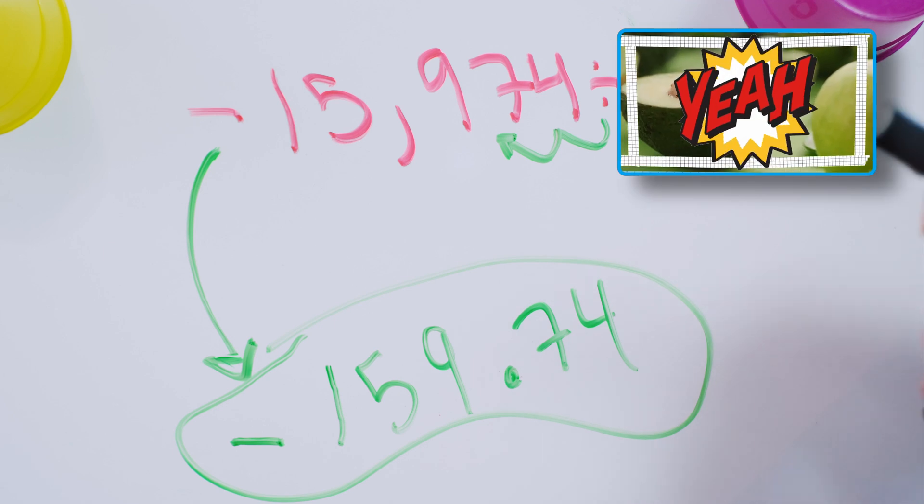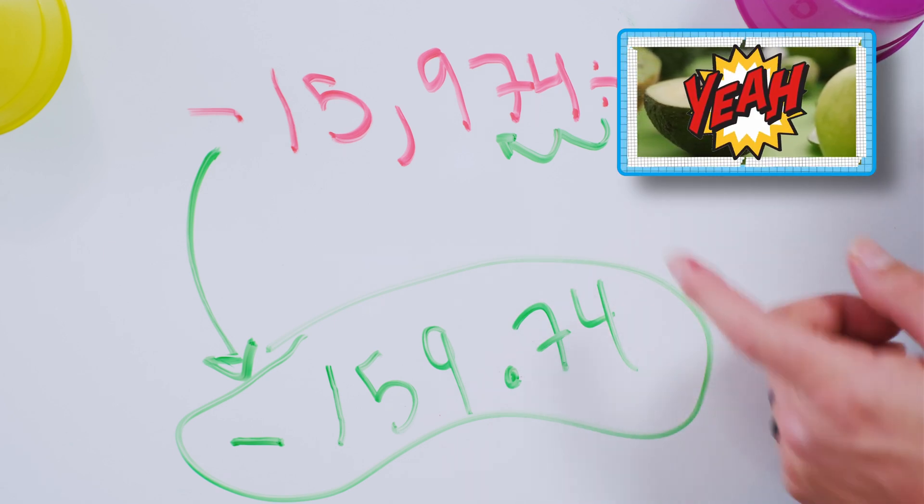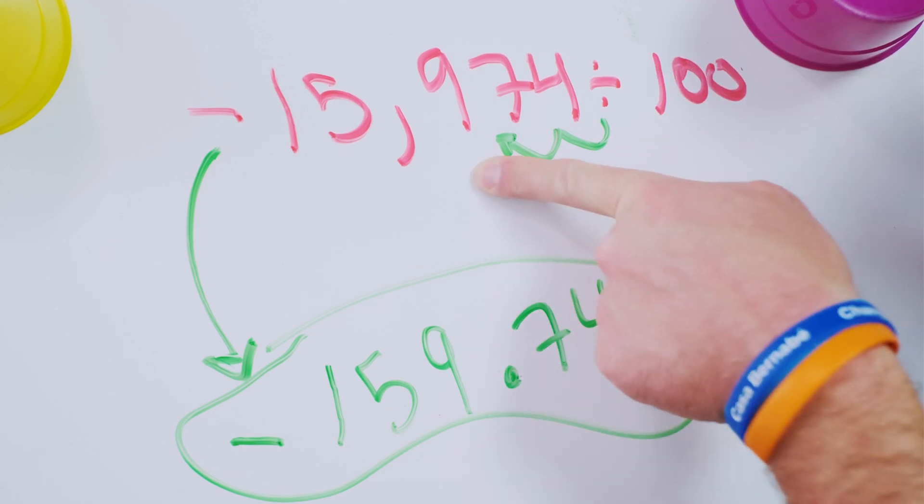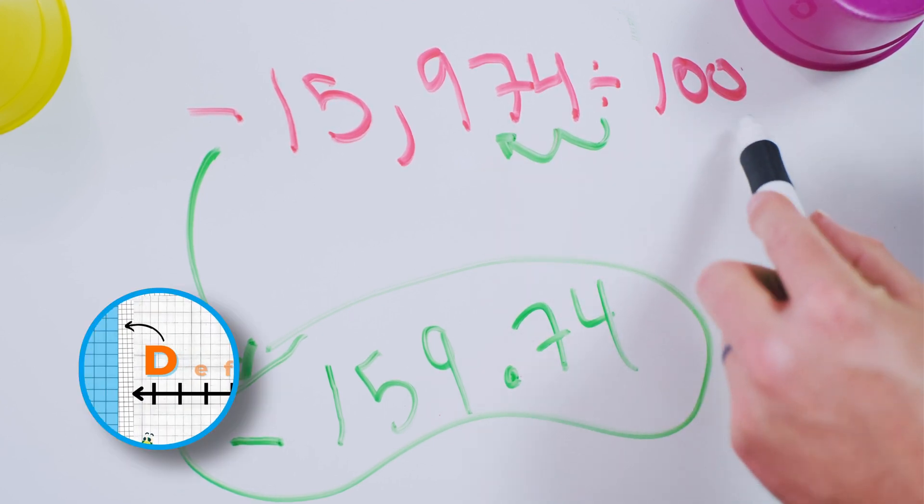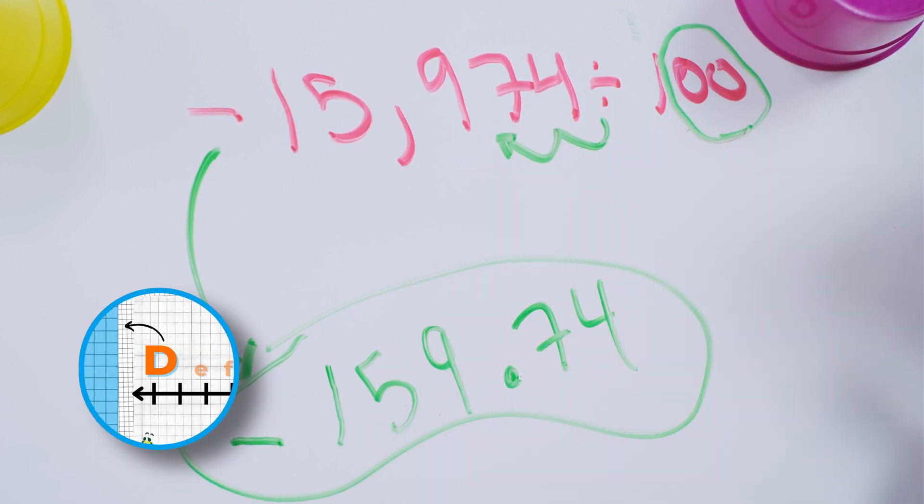Case closed. You're done, inspector gadget. You divide by 100, you move the decimal over to the left by two places because there are two zeros here. That's the shortcut. And it makes life wonderful.